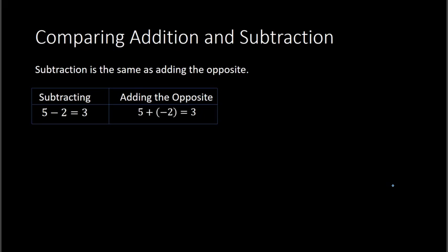So 5 plus negative 2. And as we learned in the last lesson, you simply subtract 5 minus 2, and then keep the sign of the bigger number. And the 5 is bigger, and it's positive, so my answer is a positive 3.